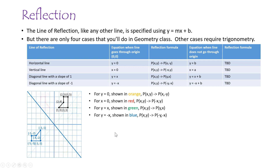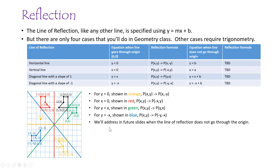So that's all four reflection cases through the origin. Here they all are shown together. Next we'll address what to do if the line of reflection doesn't go through the origin, which we'll cover in future slides.